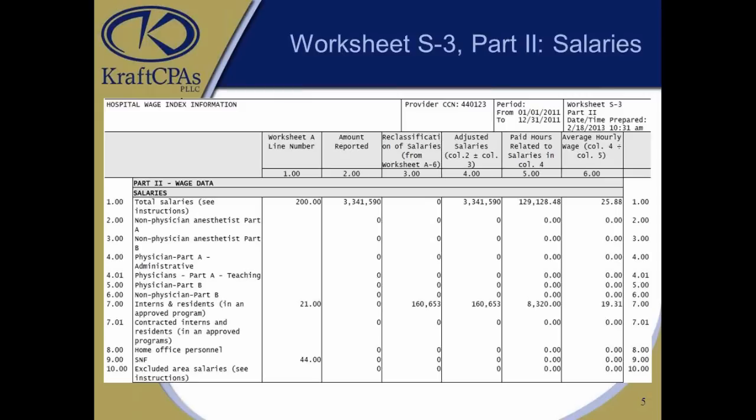Another point: the wage index for hospitals does not include excluded areas — it's just the medical surgical areas. Line 9 is related to a SNF if the hospital has one, and line 10 covers other sub-providers such as a psych unit, rehab unit, LTAC, or home health agency. All of that data gets backed out so it's just the hospital's medical surgical portion being reported.